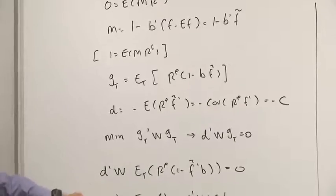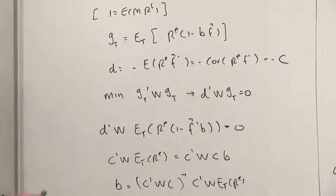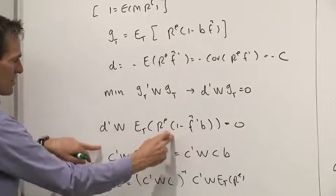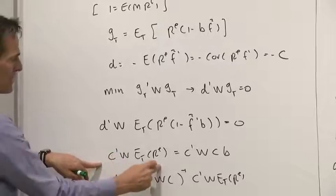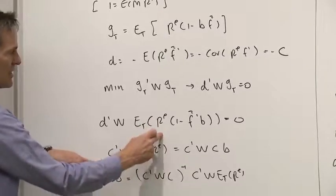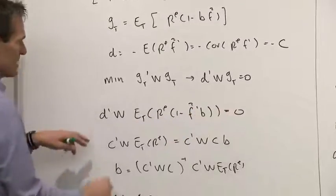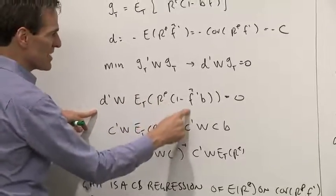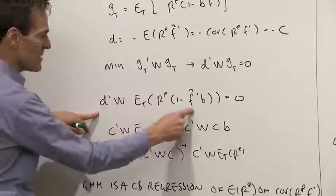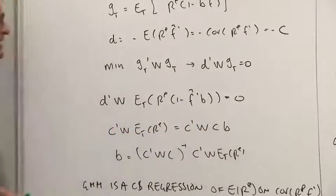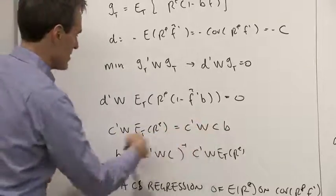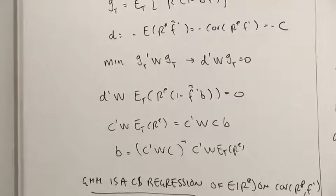d is the same as c, the covariance matrix. There's two terms to the gt, expected return and rf prime. Let's take that term over on the left-hand side, c prime w expected return. Let's take that one and put it over on the right-hand side, c prime w expected return times f times b. Expected return times f is another covariance, and then the b there. Our job, solve that for b. b is c prime w c inverse, c prime w expected return. Aha! The GMM estimate is simply a cross-sectional regression of expected returns on covariances.